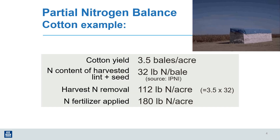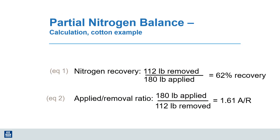For a quick review, let's go through this example of calculating nitrogen use efficiency on a cotton farm. The harvested cotton removed 112 pounds of nitrogen, and the farmer added 180 pounds of nitrogen per acre. When we go through this math, we calculate a 62 percent nitrogen recovery. Some people report the reciprocal — the ratio of nitrogen applied divided by the nitrogen removed from the field in the harvest.